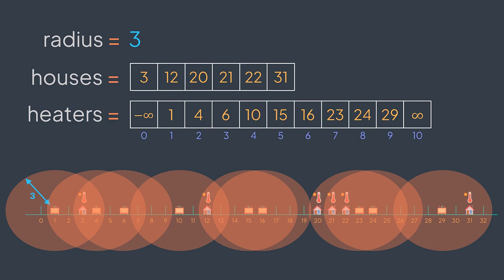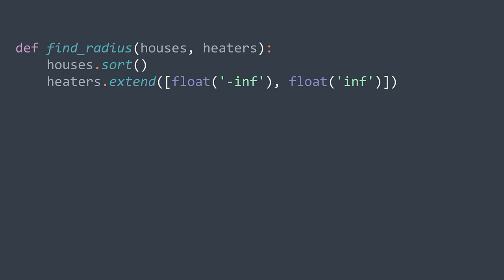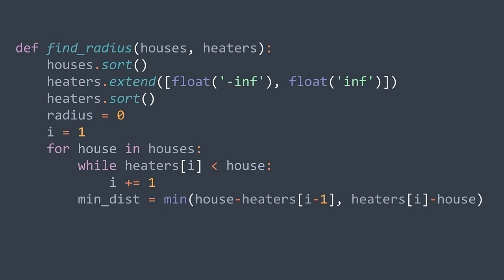We are traversing houses and heaters in a sorted way, but the input is not necessarily sorted. So we need to sort both arrays before starting. In code, we sort houses, add +infinity and -infinity to heaters, and sort heaters. We initialize radius to zero and i to one (to skip -infinity). For each house, we keep incrementing i while heater[i] is smaller than the house. After doing so, the distances are between house and heater[i] and between house and heater[i-1]; we take the minimum, representing the distance to the closest heater. We then update radius to the maximum between its current value and min_dist. After the loop we return radius.